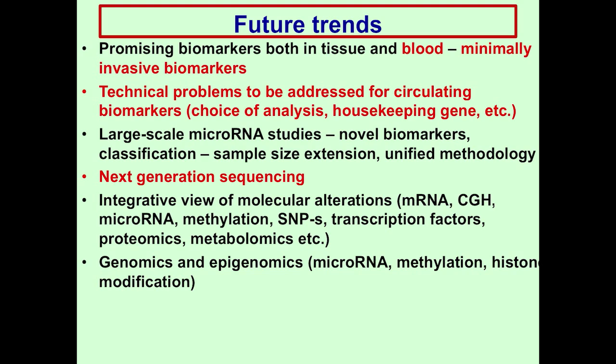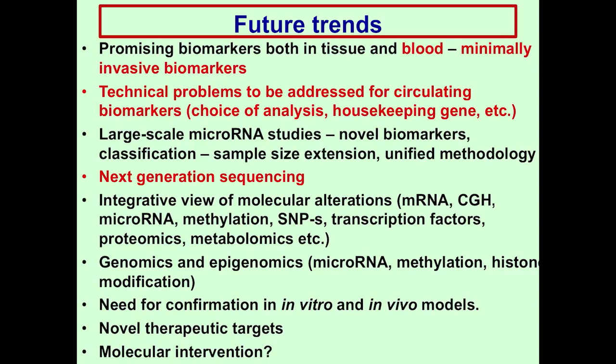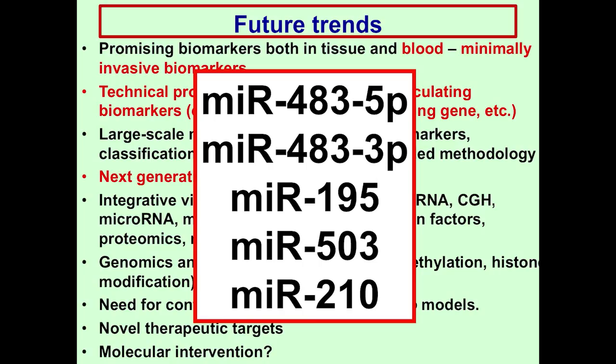As these microRNAs seem to be very important in tumorigenesis, they might also constitute novel therapeutic targets and opportunities for molecular intervention, and many more in vitro and in vivo studies should be performed. Altogether, the microRNAs most promising in the study of adrenocortical tumors are miR-483, miR-195, miR-503, and miR-210 — the general hypoxia-miR.